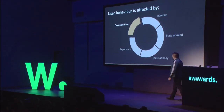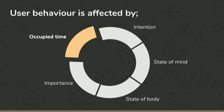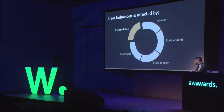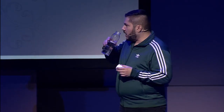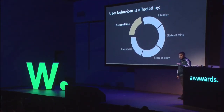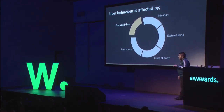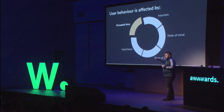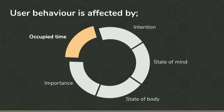User behavior is affected by many different things, based on the research I've been involved in: occupied time, intention, state of mind, state of body. Importance is a weird one — whenever you do a study on speed, you'll often slow down an experience to find the breaking point, and after 20 minutes people are still using the site. That indicates importance. If you're in a foreign country trying to get a map to load, you're going to wait. If you have to fill out a tax return on a government site, you have to wait — there's no choice. But users will never forget that experience, especially if they're in an anxious state.